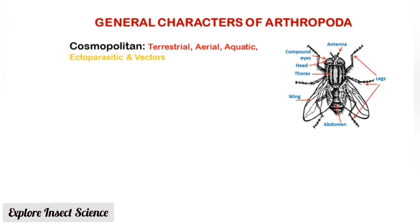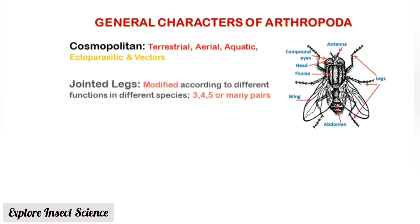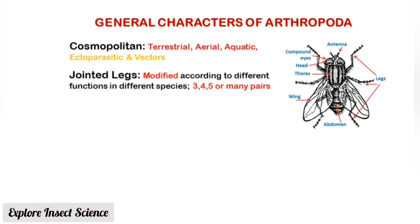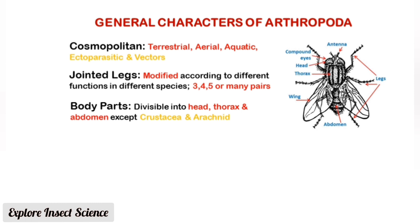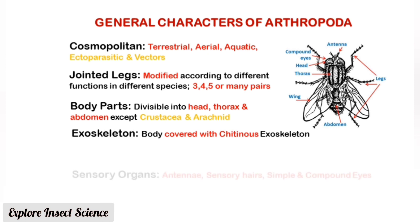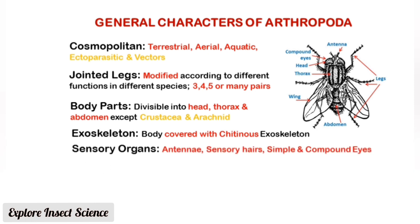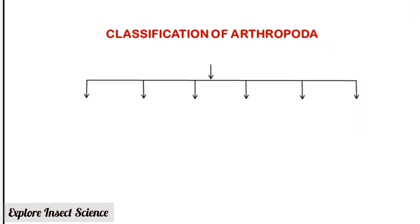Arthropods have jointed legs which are modified according to different functions in different species. There are three, four, five, or many pairs of legs. The body is divided into head, thorax, and abdomen, except in Crustacea and Arachnida. The body is covered with a chitinous exoskeleton.